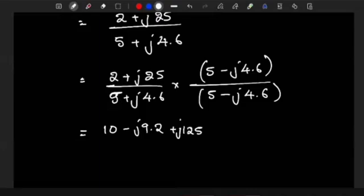And then 25 multiplies 4.6, we get 115. It's supposed to be negative but j and j squared will give us a negative as well, which changes this to positive, so you get positive 115.